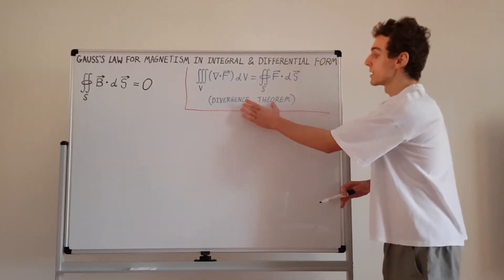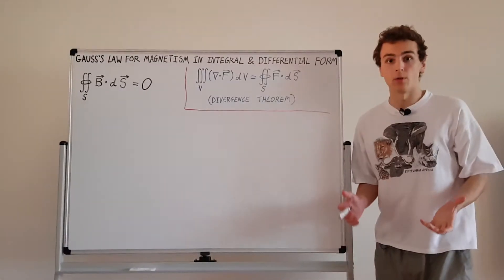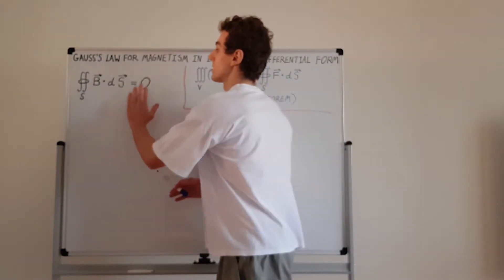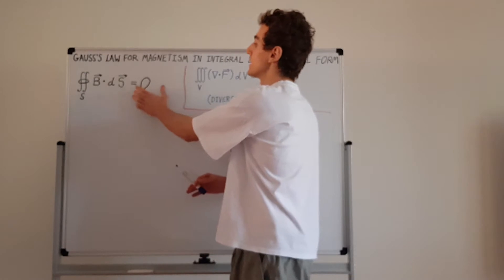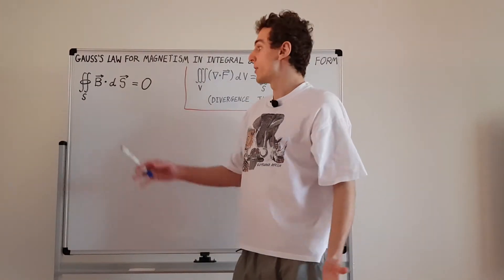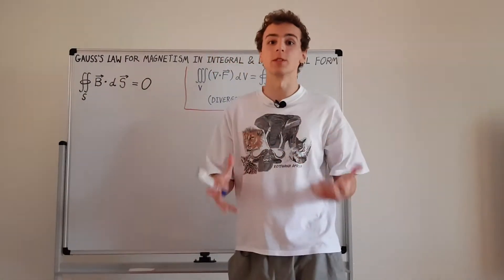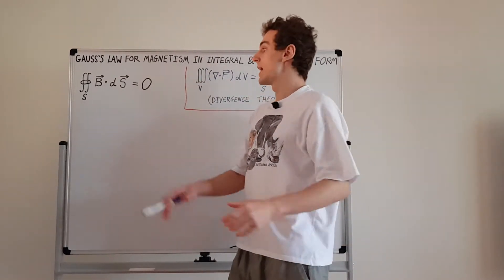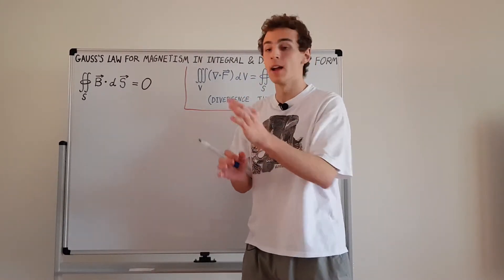We're definitely going to be using the divergence theorem to convert between the integral and differential form. Let's start off with the integral form of Gauss's law for magnetism. On the left-hand side of this integral equation we have a surface integral; on the right-hand side we just have zero. What this is saying is the surface integral of the magnetic field over some surface S is equal to zero — that is the net flux through a surface.